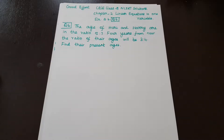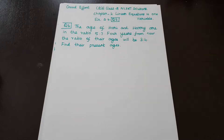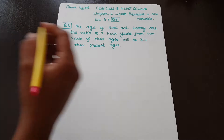Question No. 6: The ages of Hari and Harry are in the ratio 5 is to 7. Four years from now, the ratio of their ages will be 3 is to 4. Find the present ages.